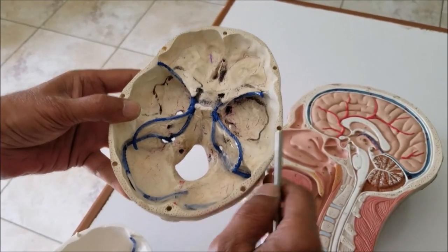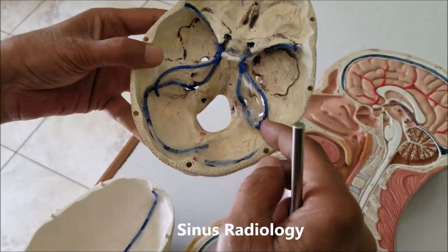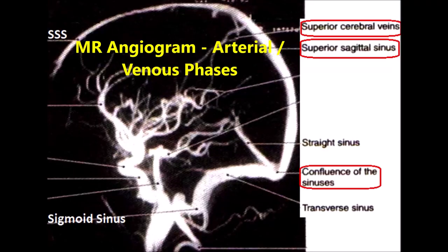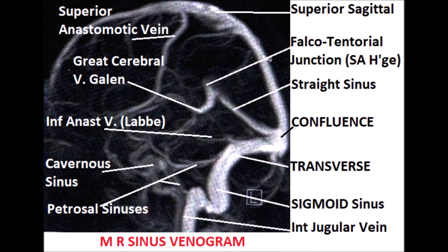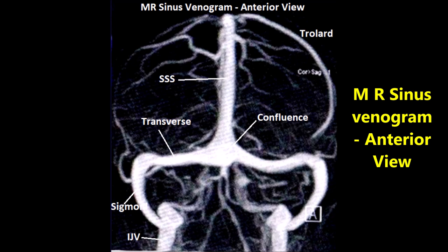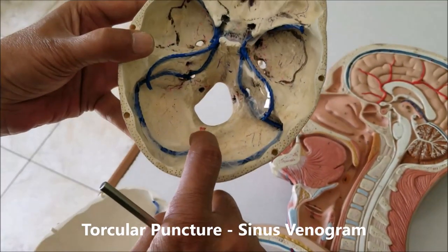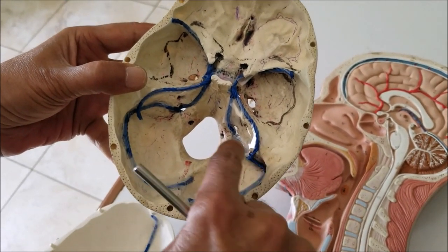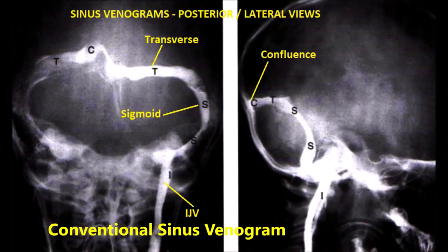The best way to investigate the sinuses is by means of MR angiography, specifically the venous phase, which is shown in the attached radiological image in this video. This is an MR angiogram showing the venous phase, and we can also see the arteries. This is a magnetic resonance sinus venogram in lateral view showing only the venous sinuses, and this is the anteroposterior view of the same. Earlier, a torcular puncture — through the torcular herophyli — was used to perform a sinus venogram to show the course of the transverse and sigmoid sinuses. This is a standard sinus venogram showing the posterior sinuses: the confluence, the transverse, and the sigmoid.